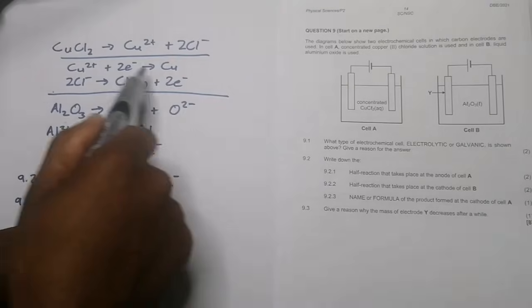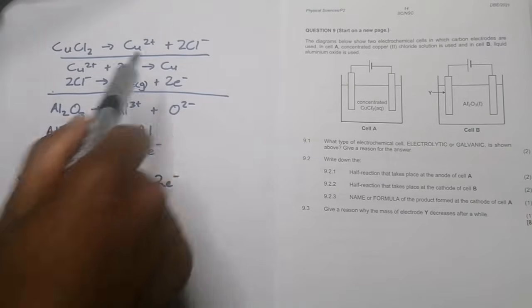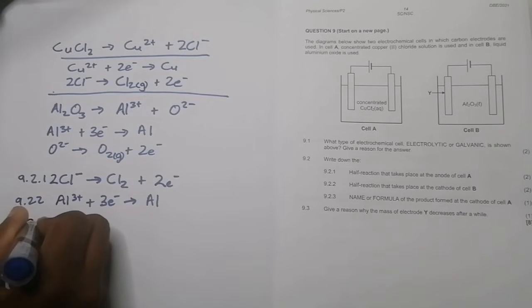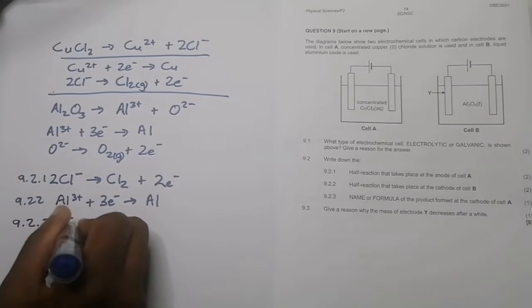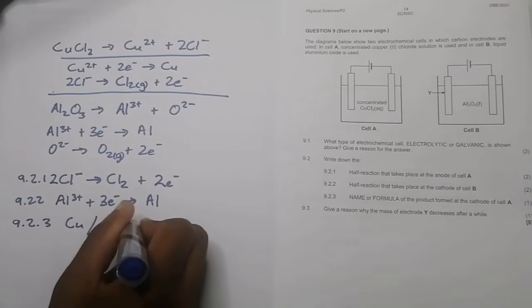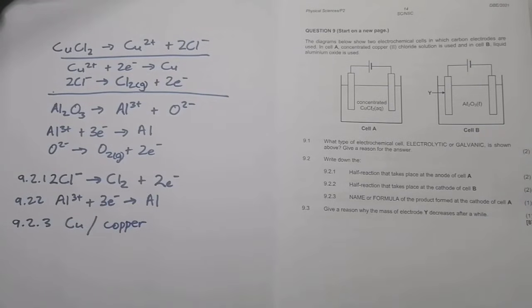And on the cathode in this case we are forming copper. So you can either write Cu there, or you can just write it out in full, that's copper that is formed there.